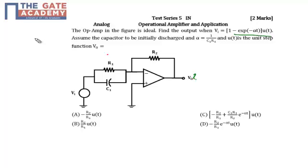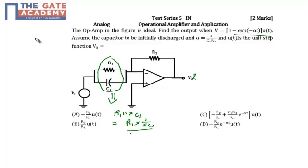In the circuit, on the input side we have a parallel RC network. I can solve this network — a parallel RC network is basically R1 parallel with X_C1. So I can solve this in the S-domain as R1 · (1/sC1) divided by (R1 + 1/sC1), which simplifies to R1 / (1 + sC1R1).